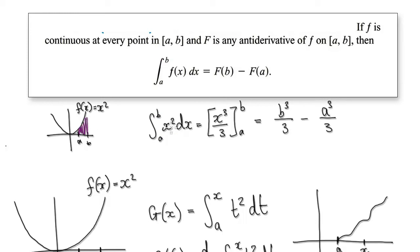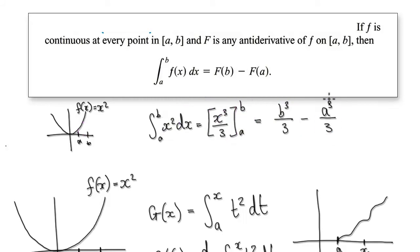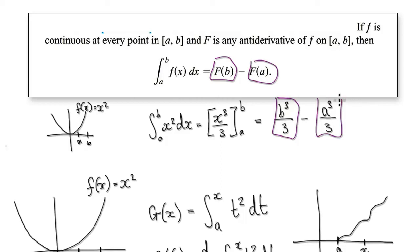You would simply integrate this, find the antiderivative, and then you would put B into here, which gives you this, and then take away — you would put A into this. So that gives you this thing here. This thing is exactly the same as this — these two expressions are equal.